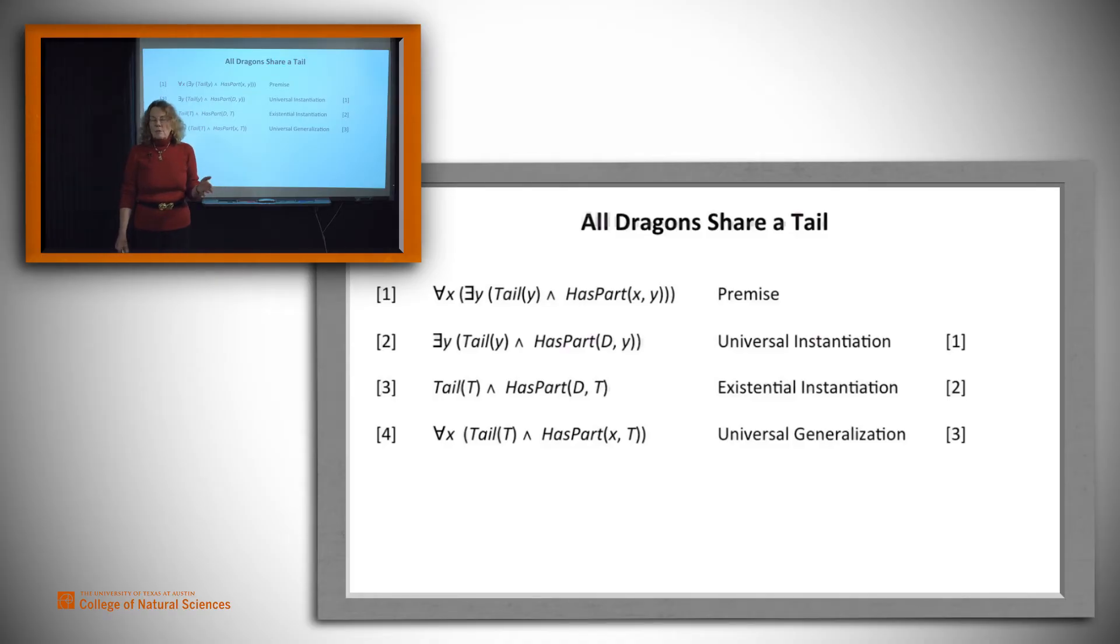And now we ought to be able to use existential generalization to say, well, if this is true of T, then there is some tail it's true of. And we'll go ahead and do that. And now we have there exists some tail such that all dragons have it.